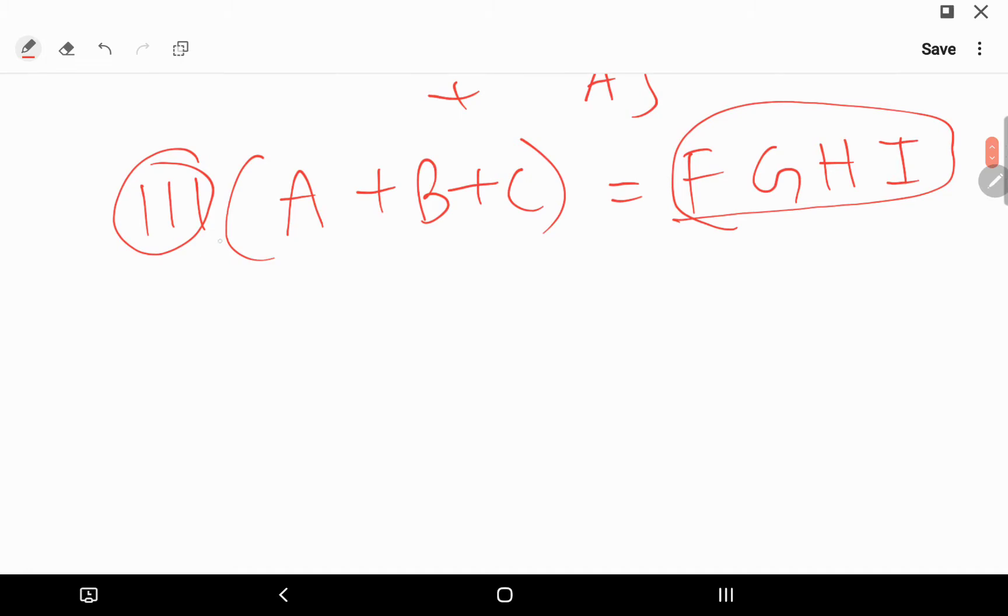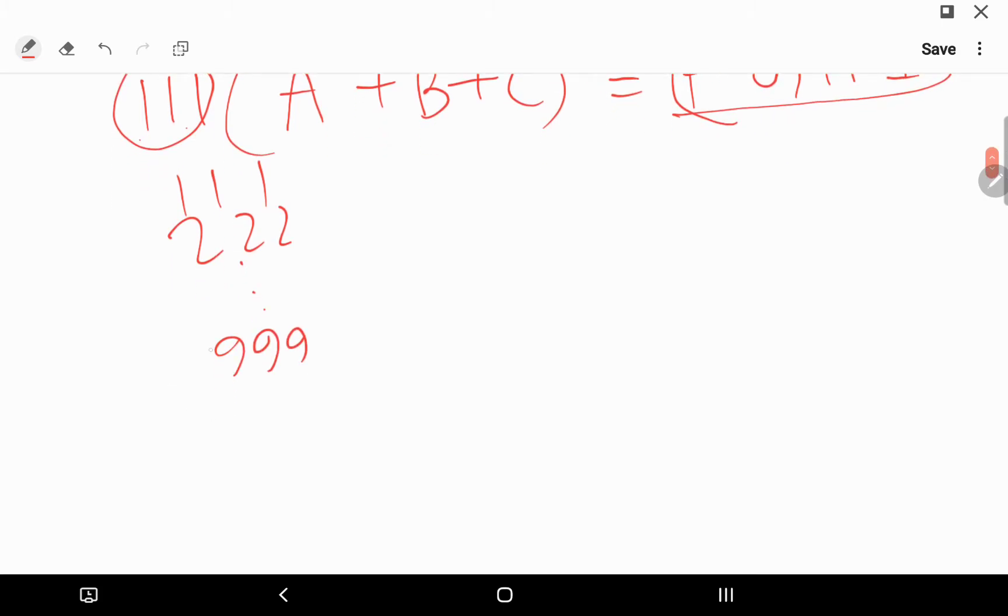Now if I multiply 111 by something, I will get something like this: 111, 222, up to 999. That cannot be my answer. If I multiply by 10, I get 1110.